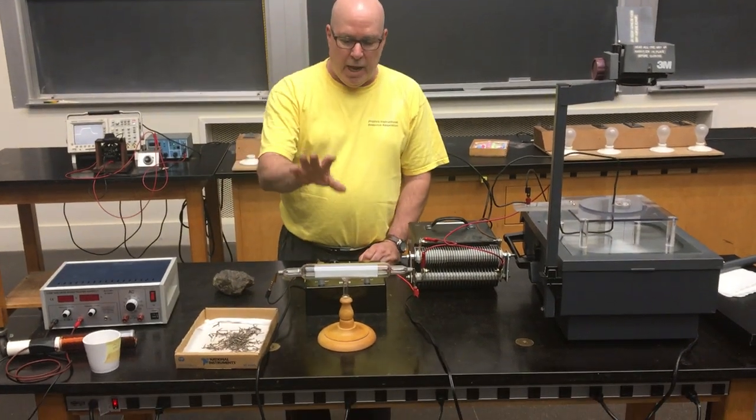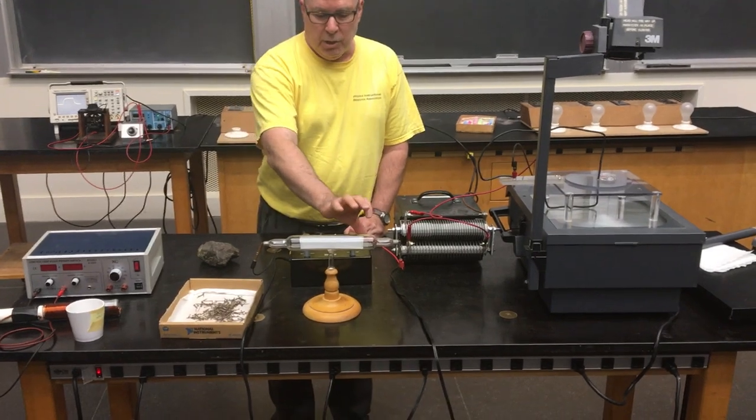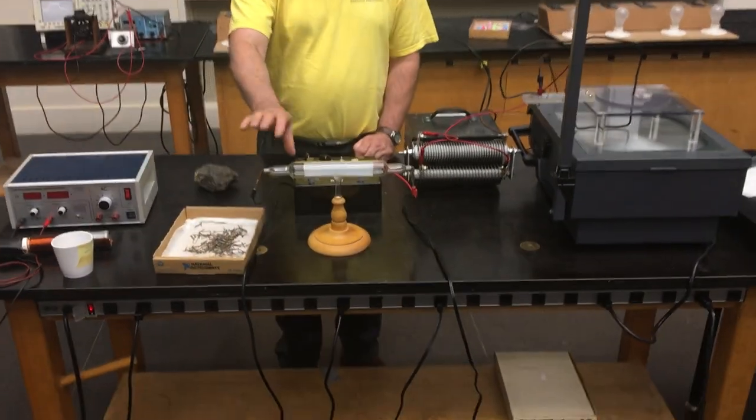I have a demonstration of a cathode ray tube here, also called a Crook's tube. It's a glass evacuated tube with a vacuum in it.